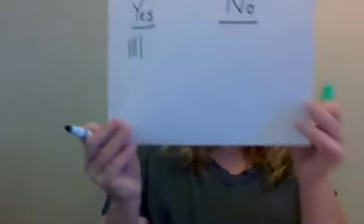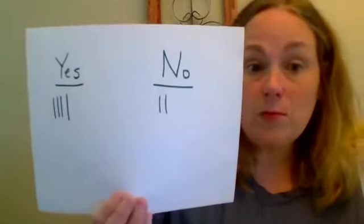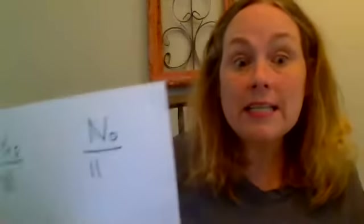One, two, three, four — four people said yes. How many people said no? Two — one, two. Tally marks are a good way to keep track of information, especially if you're keeping score. If you're playing a game, you can take down tally marks to see the score. We can see very clearly that four is more than two, and more people went outside than did not.